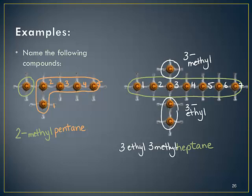Remember that numbers and letters can never touch, so they have to be separated by a dash. So I need a dash here between the three and the E. I need a dash here between the L and the three, and a dash here between the three and the M, making 3-ethyl 3-methylheptane. You can see how very quickly the names of these compounds can get really long.